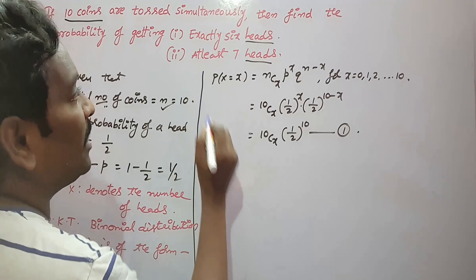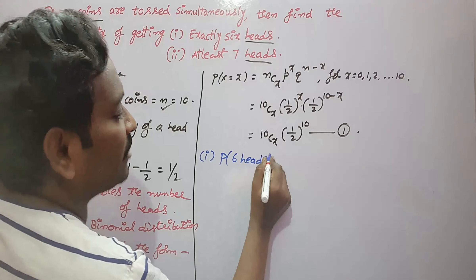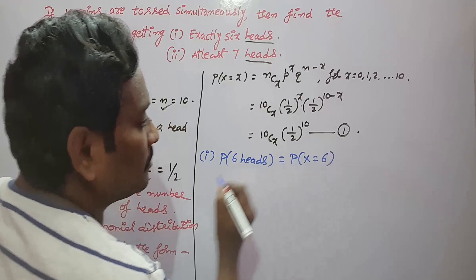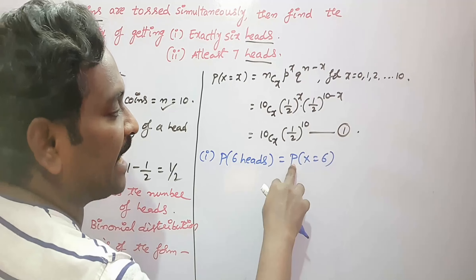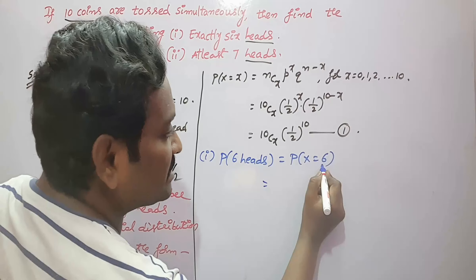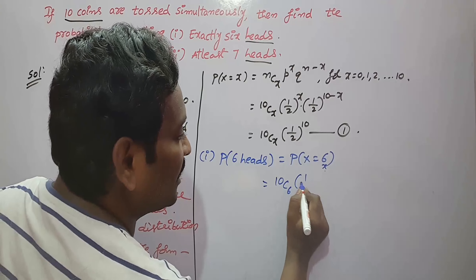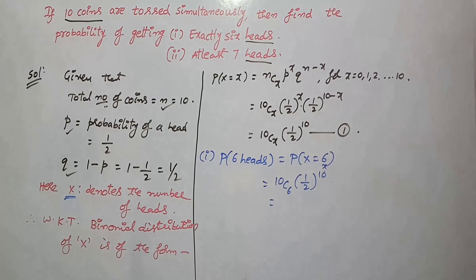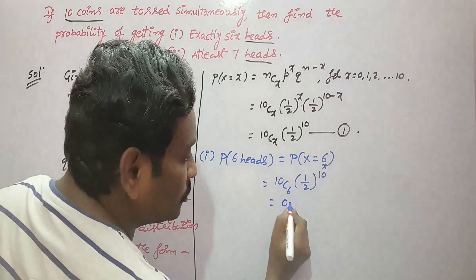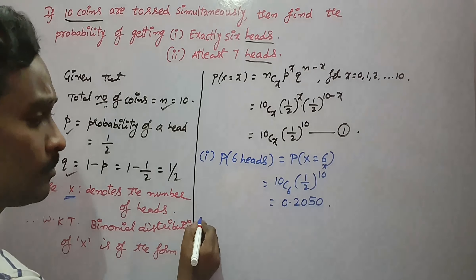First, we find the probability of getting exactly 6 heads. In symbolic form: P(X = 6). Replacing x = 6 in equation 1: P(X = 6) = 10C6 · (1/2)^10. Using a scientific calculator, this gives 0.2050.